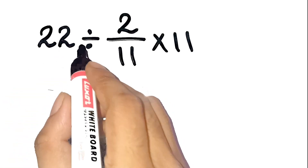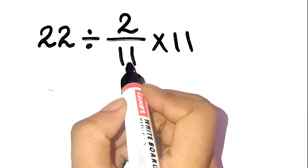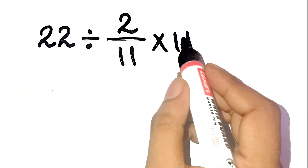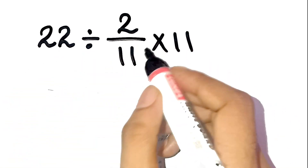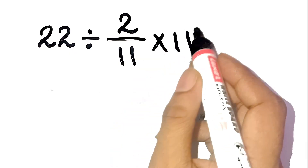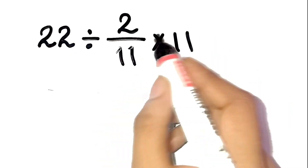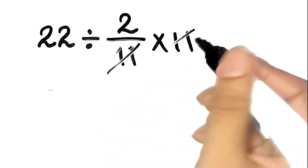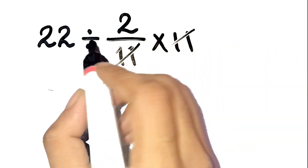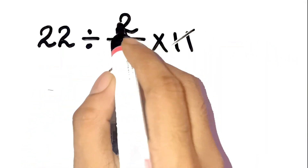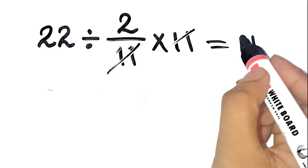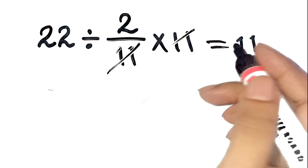22 divided by 2 over 11, multiplied by 11. Most people look at this and go, oh, easy — the 11s cancel out, right? Then they quickly say 22 divided by 2 equals 11. Boom, done.